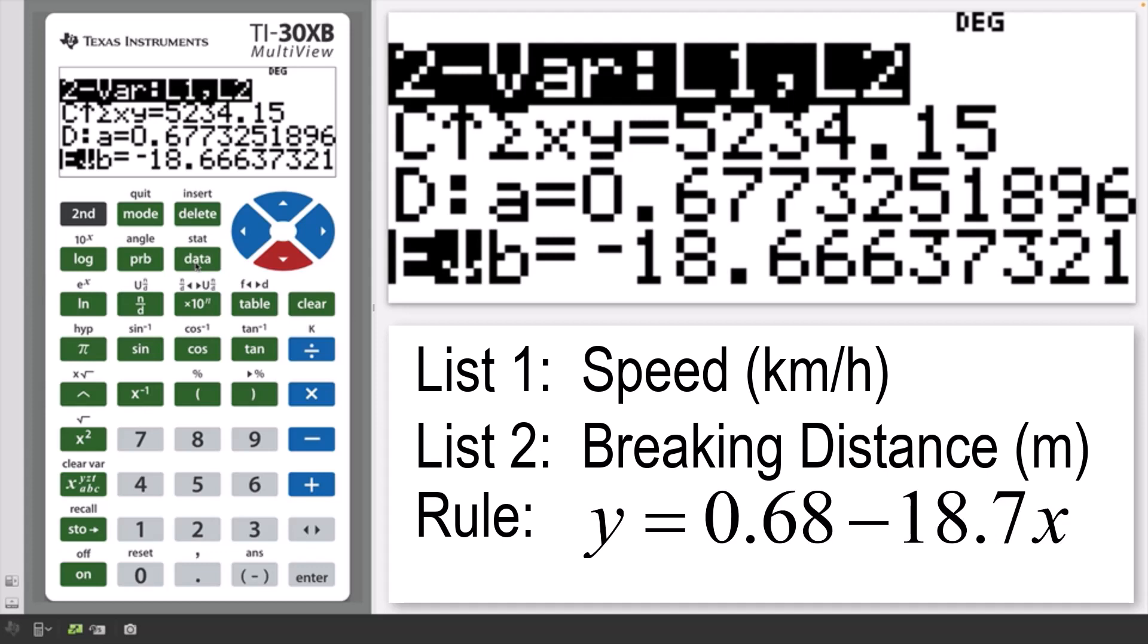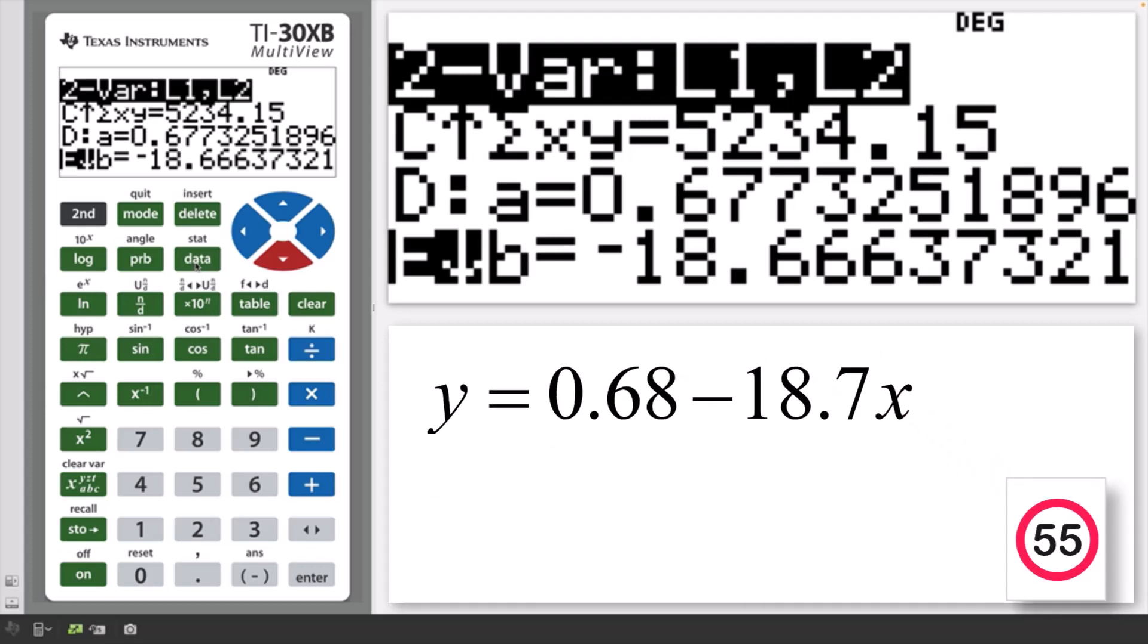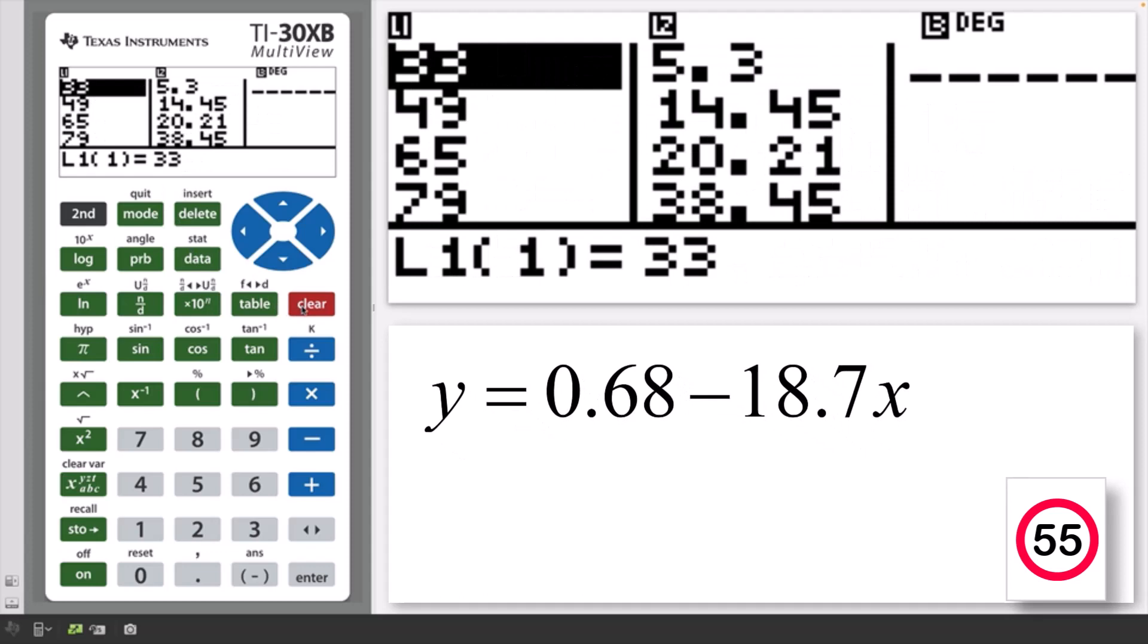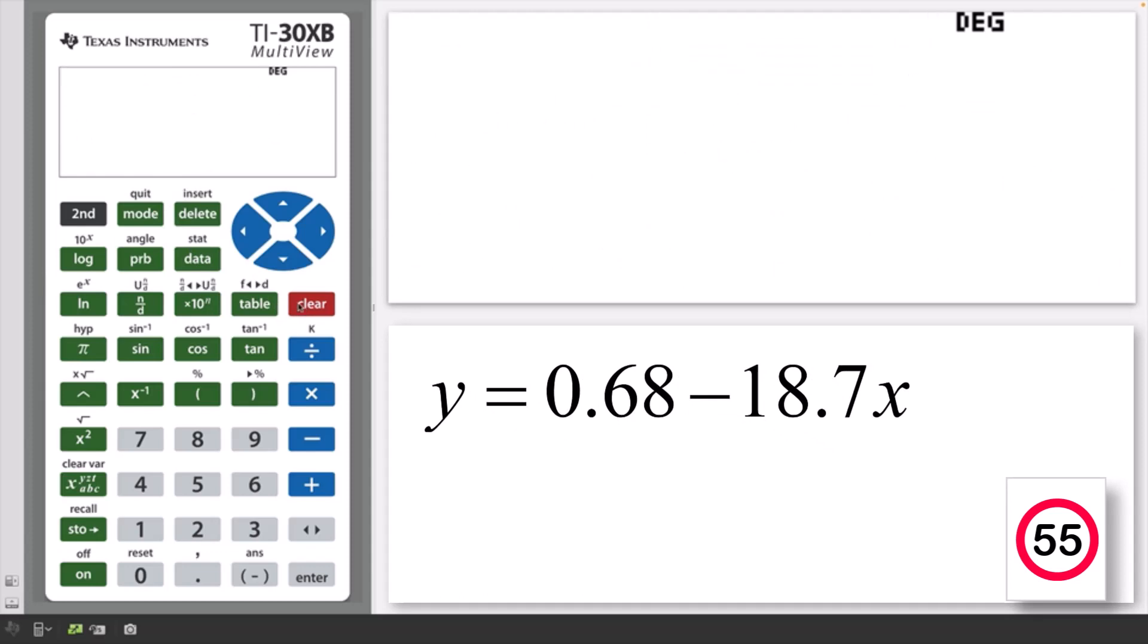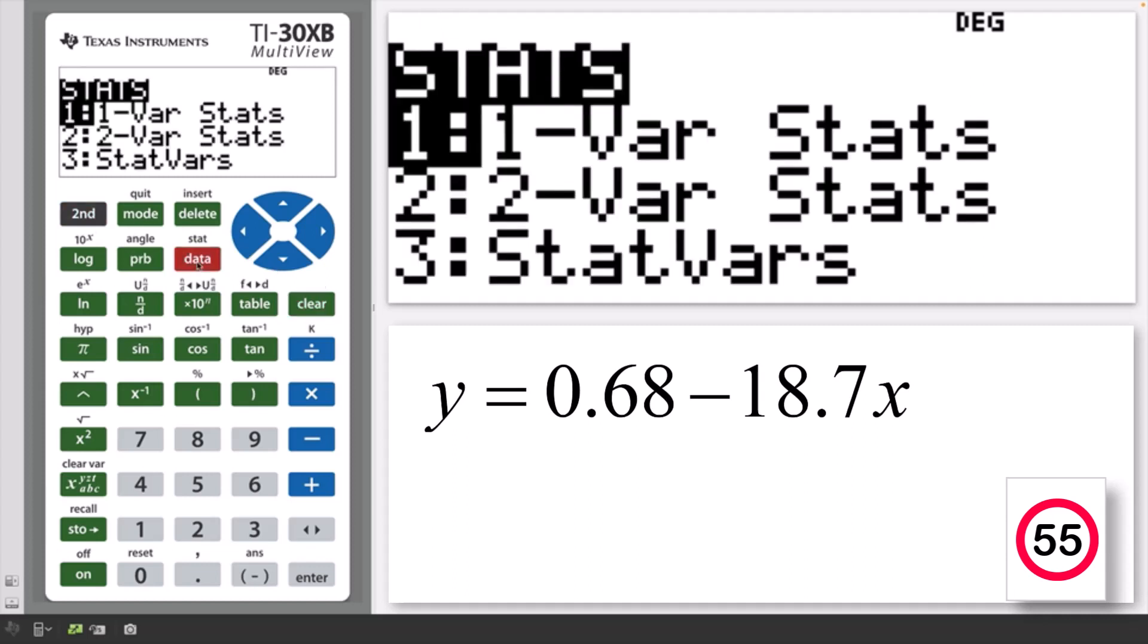To use this equation to predict the braking distance for a speed of 55 kilometers per hour, press CLEAR and CLEAR to return to the home screen. Press second and data to access the stat menu and select option three for the statistical variables.